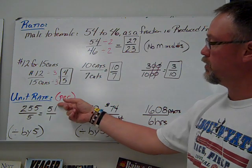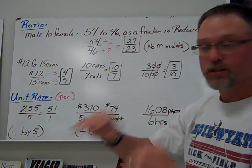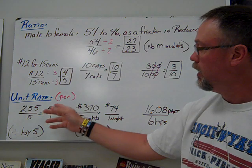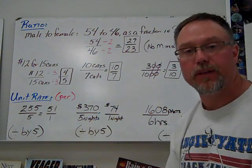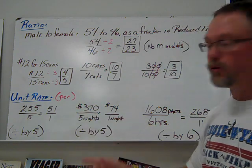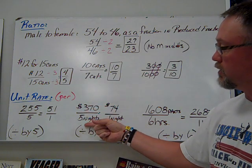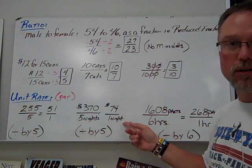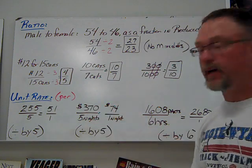For unit rate, the word you're going to look for is per. We set it up as something over something. 255 over 5. To figure out the unit rate, we divide by 5, and we always want to get 1 at the bottom. That's our goal for unit rates. Next one, hotel rooms cost $370 in 5 nights. What is that for one night? We divide by 5 and get $74 for one night.